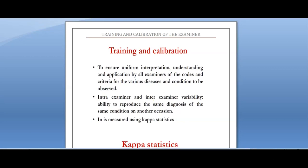Hello everyone, welcome back to a new session on Dentistry and More. Today's topic is training and calibration of the examiner. Before we go into a research process or before we conduct a survey, we need to train and calibrate the examiner. For example, if we are doing an oral health survey, we have indices like OHIS and DMFT to check oral hygiene status and dental caries status of a group of people.